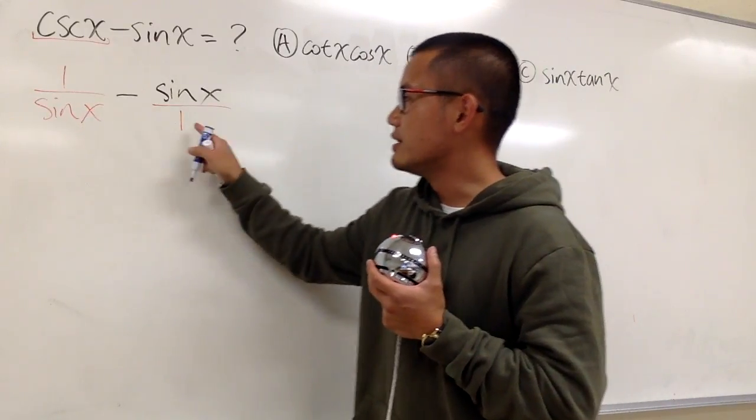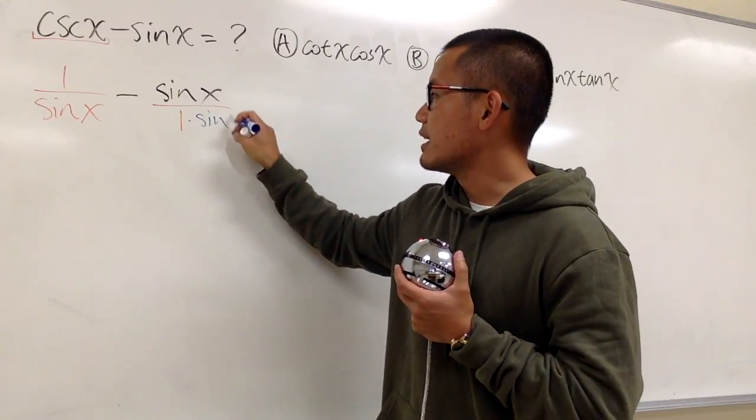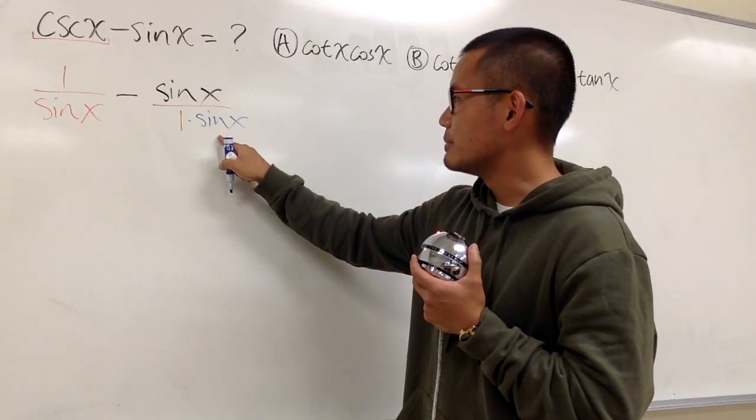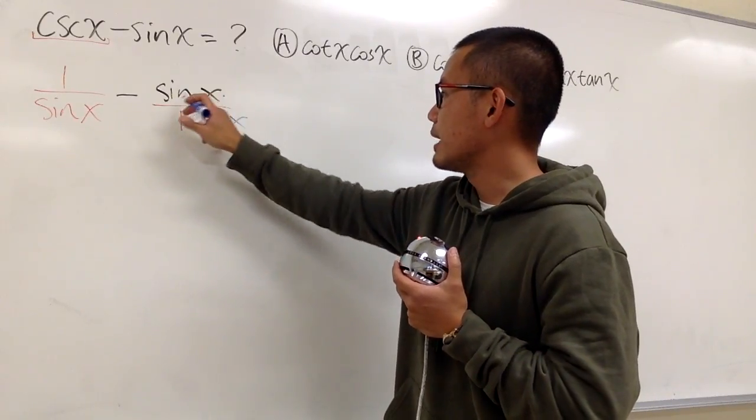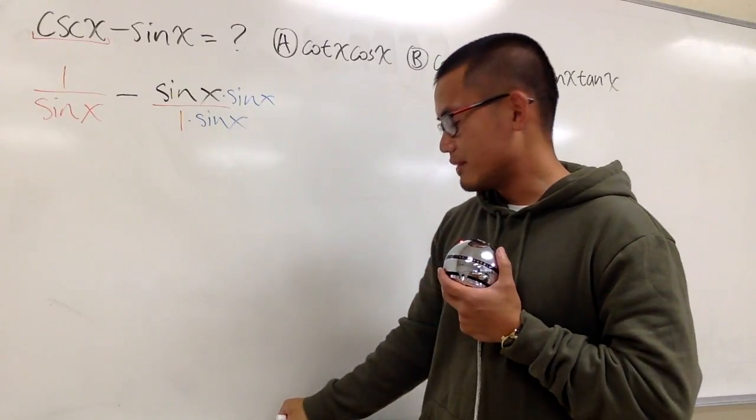This is sin x already. This is 1. I have to multiply this 1 by sin x, so that this will be the same as that. And don't forget to do the same thing on the top as well. So we multiply this sin x by this sin x. And this is what we have at the moment.